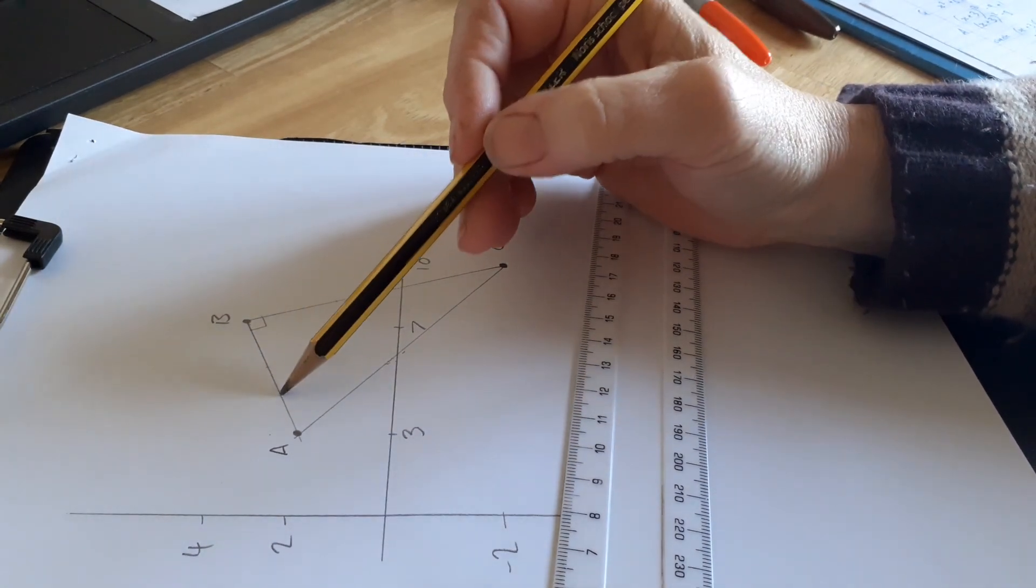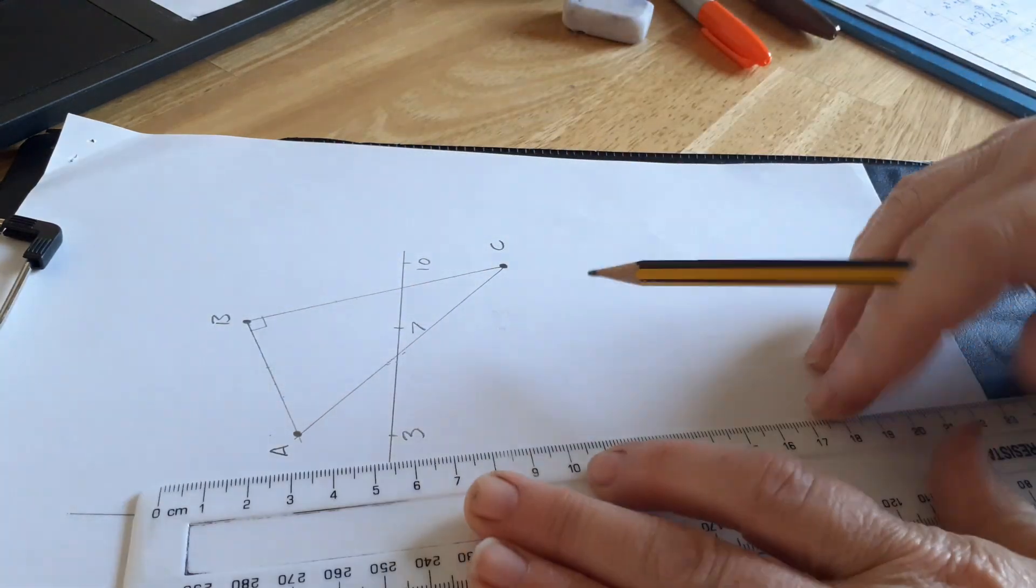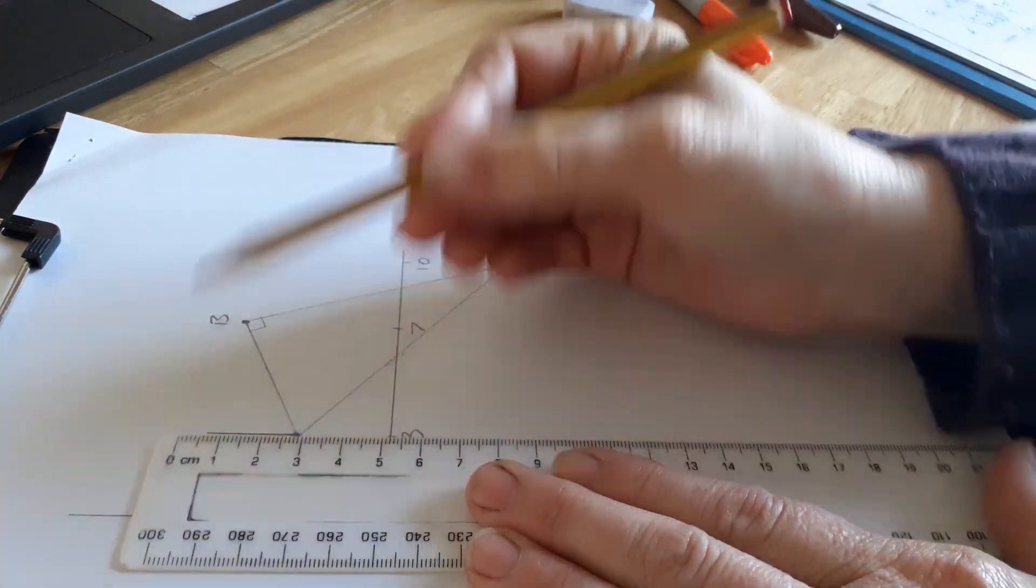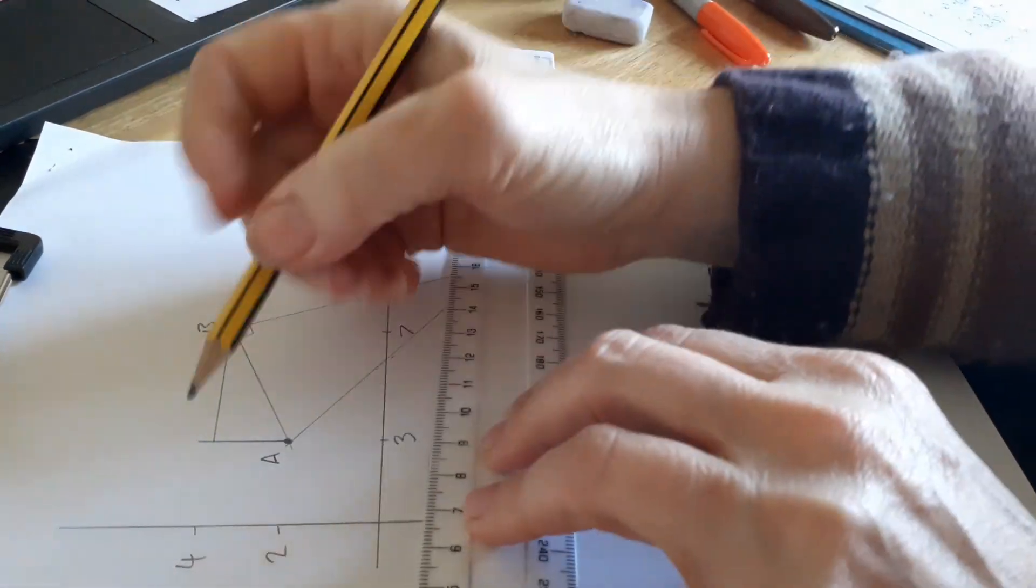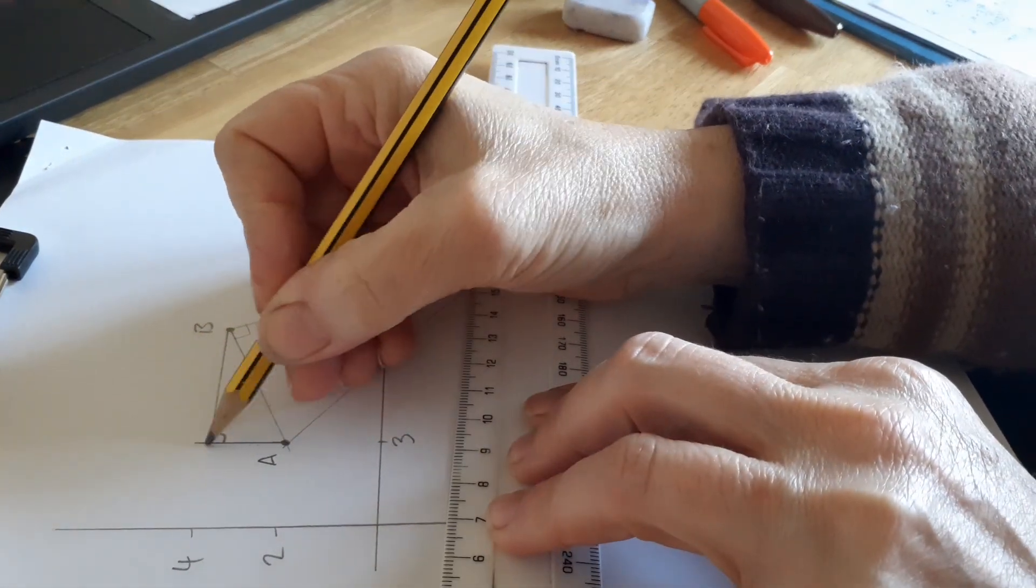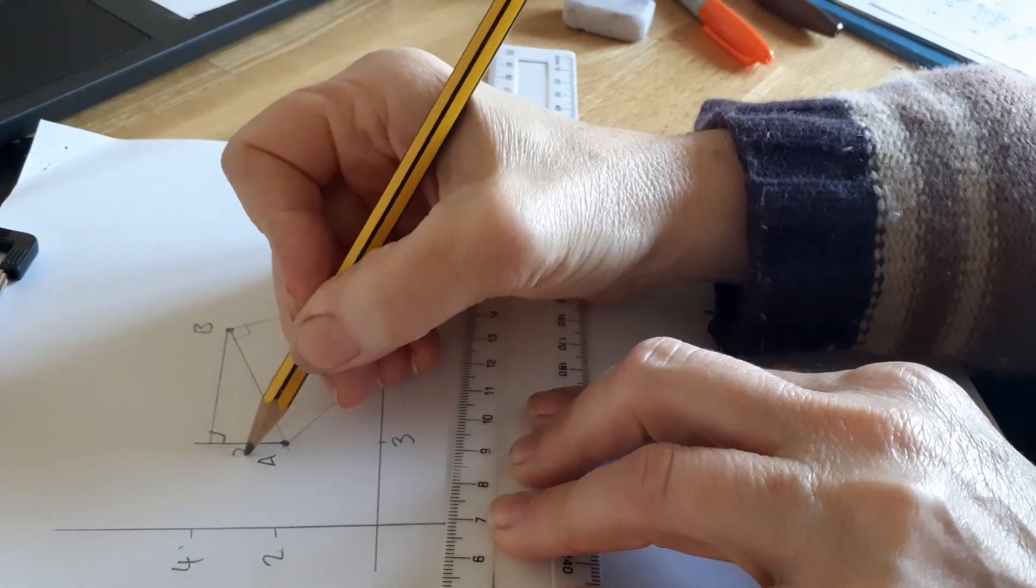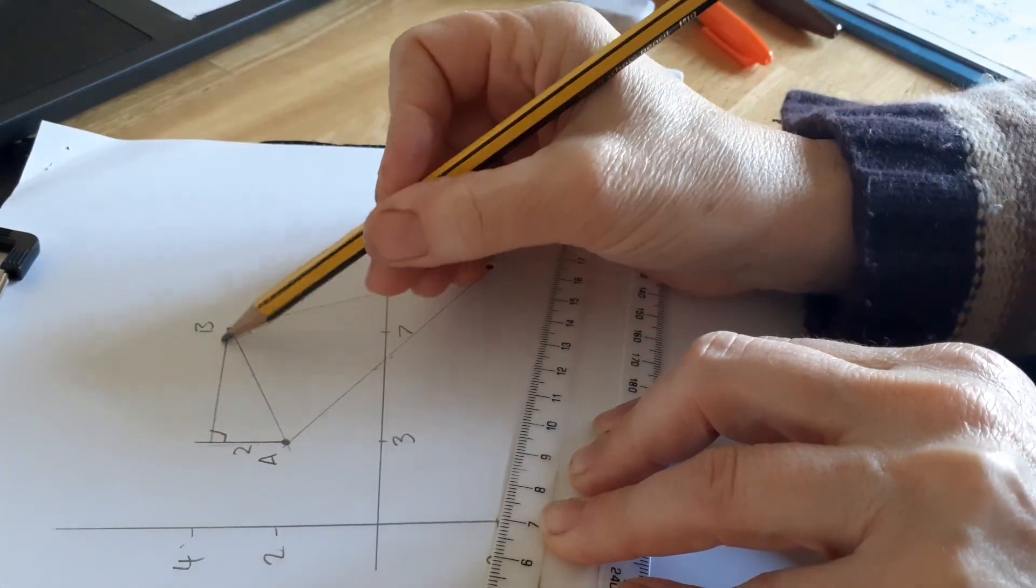Well, these are both hypotenuses on different right angle triangles. So if I did this, this is a right angle, this side is 2 and this side is 4.